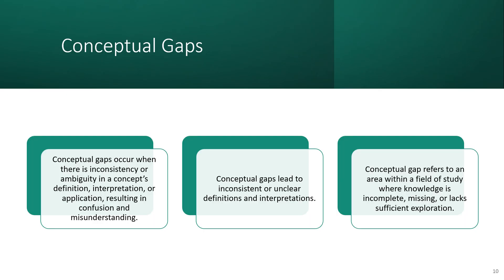The conceptual gap is also an important research gap. This occurs where there are inconsistencies or ambiguity in concepts, definitions, and interpretations, resulting in confusion and misunderstanding. For example, take the concept of climate change — it is defined by different authors using different models, measurements, and metrics. If previous studies are using the metrics of author A, and through an extensive literature review you discover there are other metrics or measures for that concept, that is what we mean by a conceptual gap. Conceptual gaps lead to inconsistency in clear definitions and interpretations, and refer to an area where knowledge is incomplete, missing, or lacks sufficient exploration.